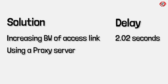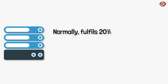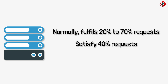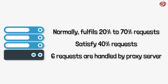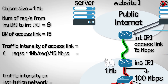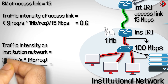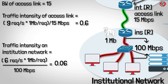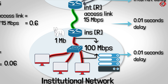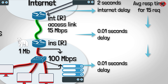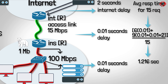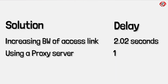The second option is to employ a proxy server. Normally, a proxy server fulfills between 20% to 70% of requests. In our scenario, let's assume it satisfies 40% of requests, meaning 6 out of 15 requests are handled by the proxy server, while the remaining 60%, or 9 out of 15 requests, are forwarded to the internet. Therefore, the traffic intensity of the access link is 0.6 and the traffic intensity on the institution network is 0.06. A traffic intensity of less than 0.8 causes minimal delays of about 10 ms (0.01 seconds). Therefore, the overall average delay in receiving objects for all 15 requests is 1.216 seconds, so the second solution causes a delay of 1.216 seconds.